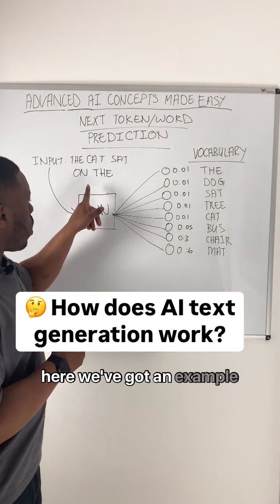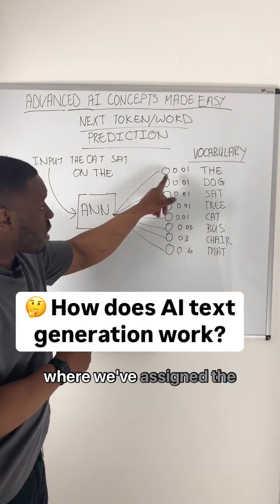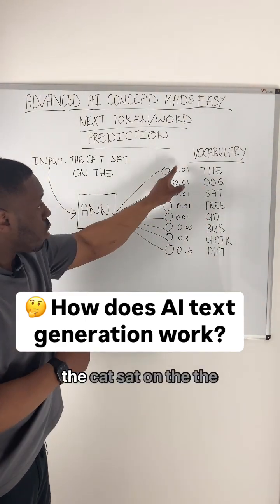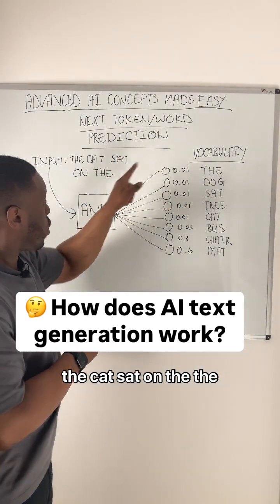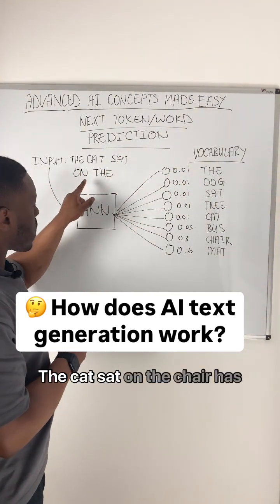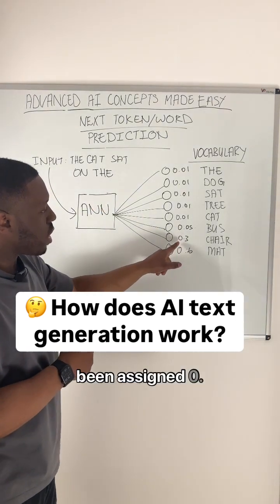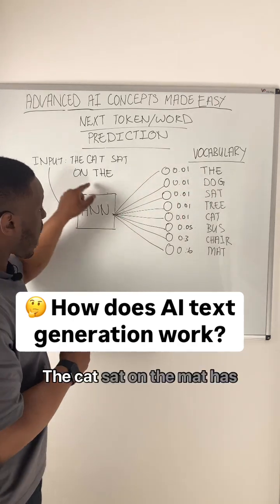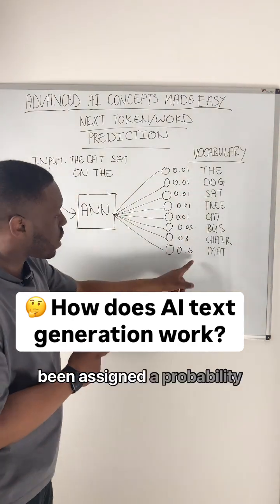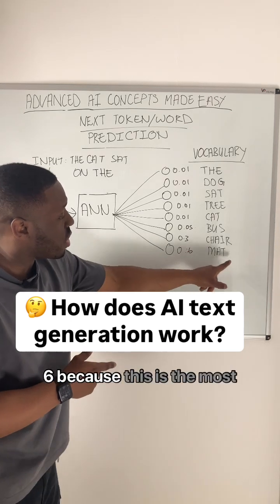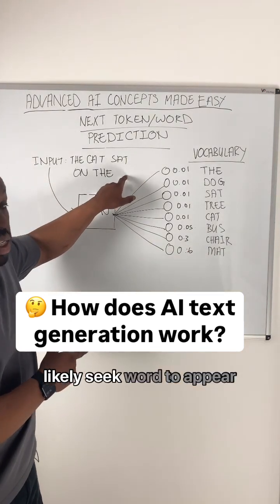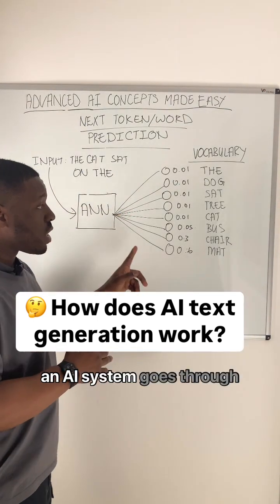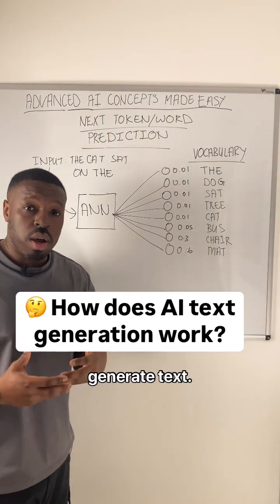Here we've got an example where we've assigned a probability to all the words in this example vocabulary. 'The cat sat on the the' doesn't make sense. 'The cat sat on the chair' has been assigned 0.3 probability, which is higher than 0.01 for 'the'. 'The cat sat on the mat' has been assigned a probability of 0.6 because this is the most likely word to appear next in this sequence, and that's the process that an AI system goes through over and over again to generate text.